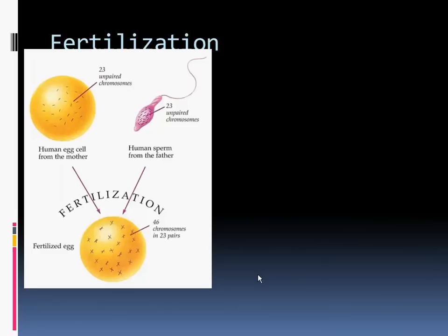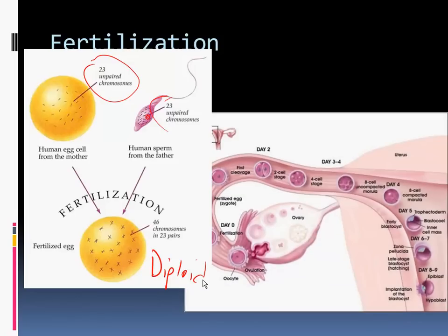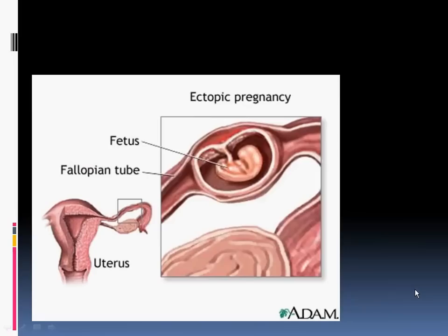So fertilization is the formation of a diploid cell, because the egg was haploid, 23, and the sperm was haploid, in the head portion of the sperm carrying the 23 chromosomes. When they unite, they make one cell, and this cell we call diploid, because it contains 46, the full set of chromosomes. Fertilization is occurring in the oviduct, and this is going to happen before the zygote moves along and implants in the uterine lining.